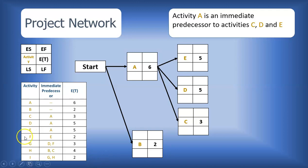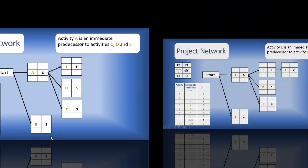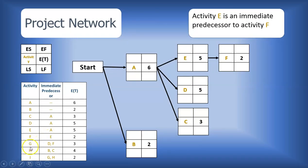The next activity is F, and you will notice that F immediately follows E. Then we have G, and G has two immediate predecessors, activity D and activity F. So we are going to have arrows going from activity D and activity F to activity G.